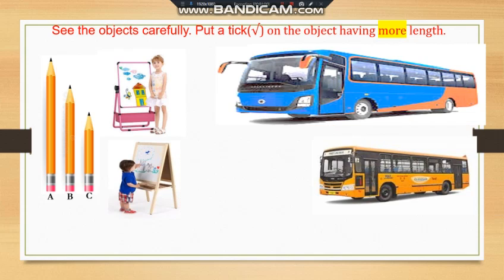Now in the 1st picture, 3 pencils are given: A, B, C. Which have more length? Pencil A has more length. Therefore, you have to make a tick mark. Correct tick mark.